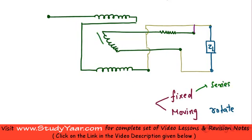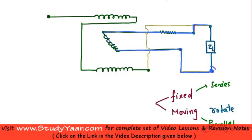Now let's look at the moving coil. The moving coil is connected in parallel with the load. Starting from one terminal and tracing through the moving coil, you reach the other terminal — so the moving coil is kept in parallel with your load.